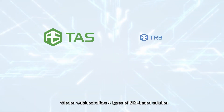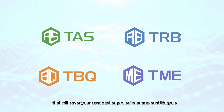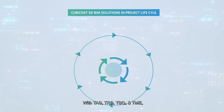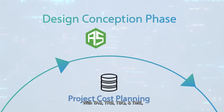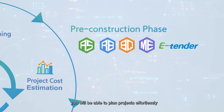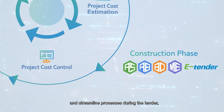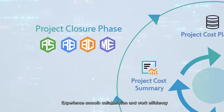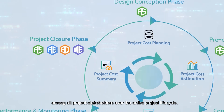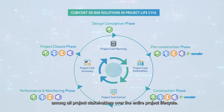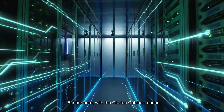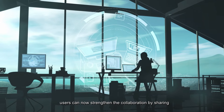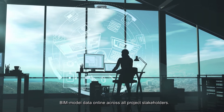Glodon QBiCos offers four types of BIM-based solutions that will cover your construction project management lifecycle. With TAS, TRB, TBQ, and TME, you will be able to plan projects effortlessly and streamline processes during the tender, design, and construction stage. Experience smooth collaboration and work efficiency among all project stakeholders over the entire project lifecycle. Furthermore, with the Glodon QBiCos series, users can now strengthen the collaboration by sharing BIM model data online across all project stakeholders.